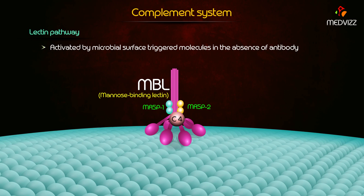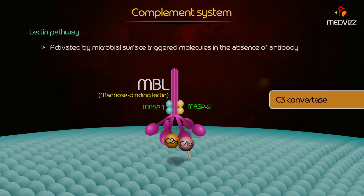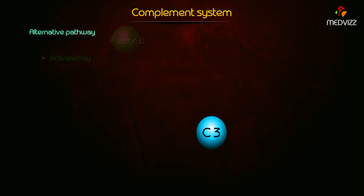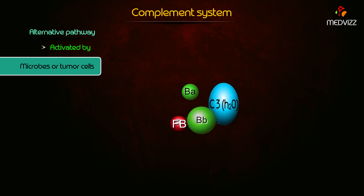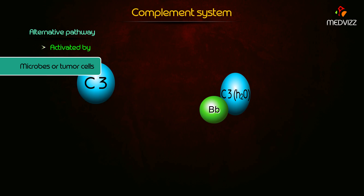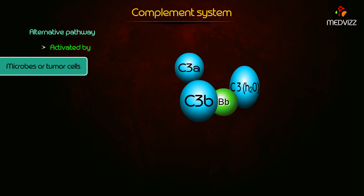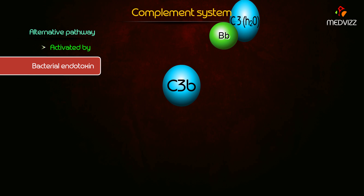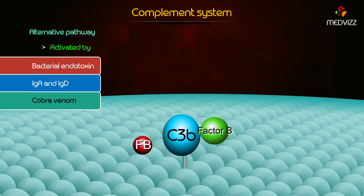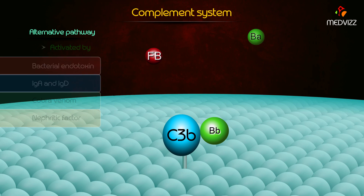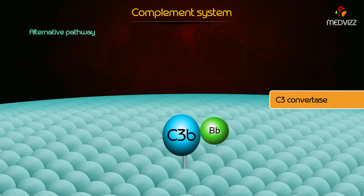The lectin pathway is triggered by microbial surface molecules in the absence of antibody. The alternative pathway is activated by microbes or tumor cells and is also called the properdin system. This pathway is activated by bacterial endotoxin, IgA, IgD, cobra venom, and nephritic factor.